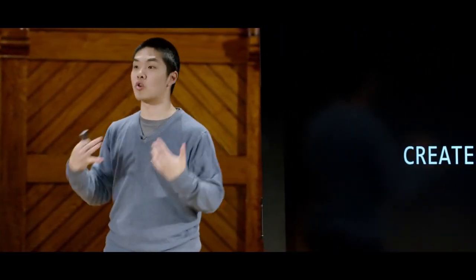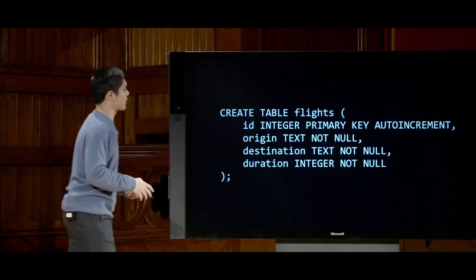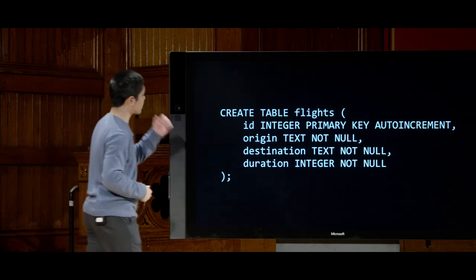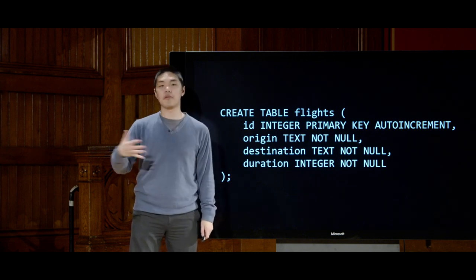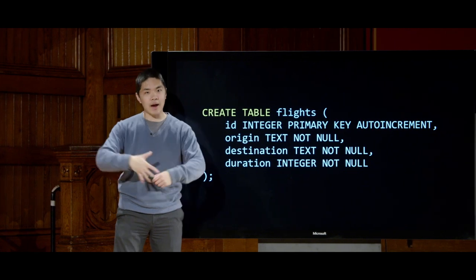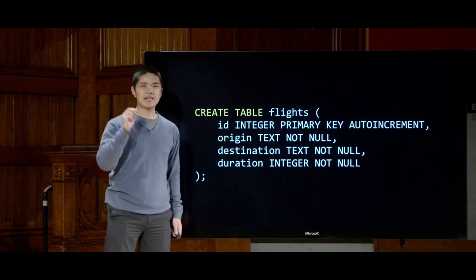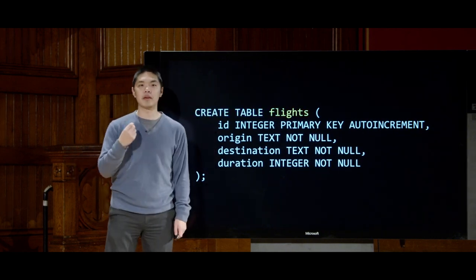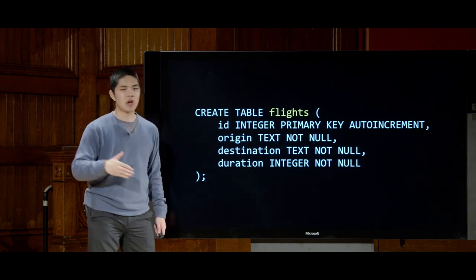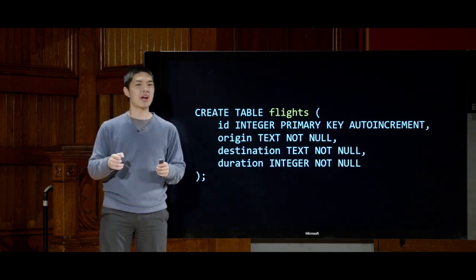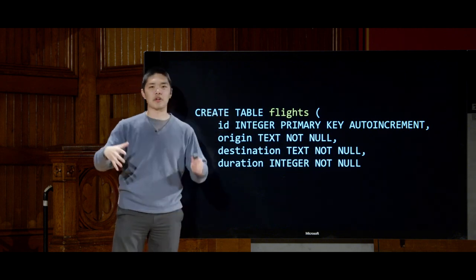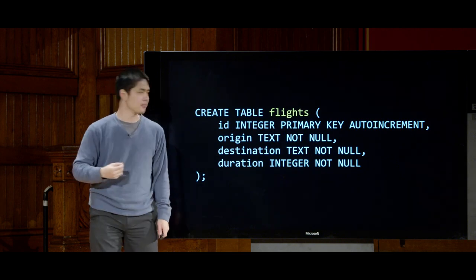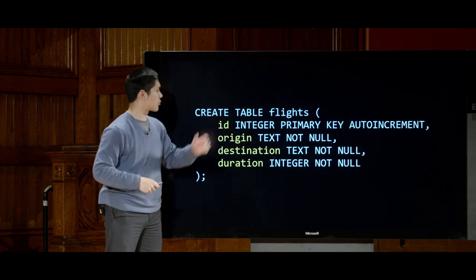Now that we understand data types, let's look at how to actually create a table inside a database. There are various SQL commands we can run. The first is a command to create a table. The syntax for creating a table in SQLite looks like this: we begin with the keyword CREATE TABLE, followed by the name of the table — here, 'flights'. Then, in parentheses, a comma-separated list of all the columns that should be present in the table.